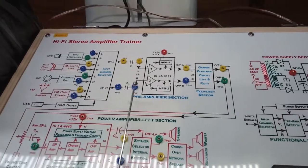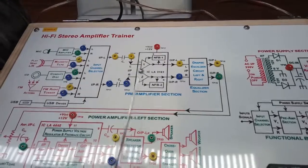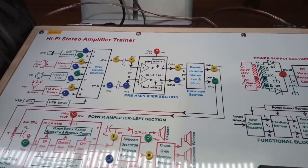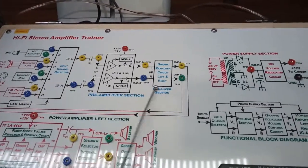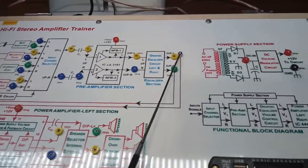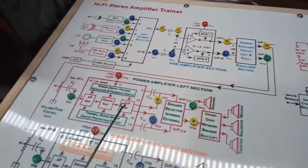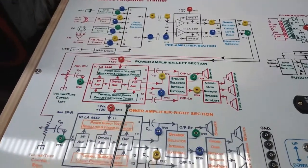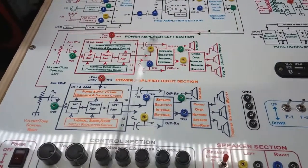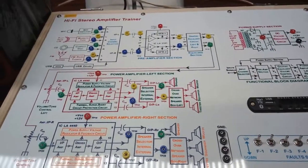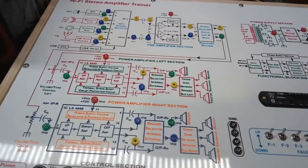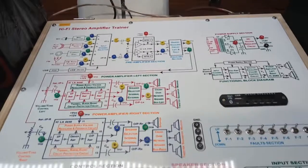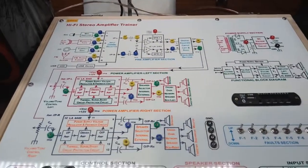From the pre-amplifier section they go through power amplifier stages, then to this equalizer section, and from here to the power amplifier section. This is the power amplifier left section and this is the power amplifier right section. This is done because the pre-amplifier output cannot drive the loudspeaker directly, hence it is given to the power amplifier stage.